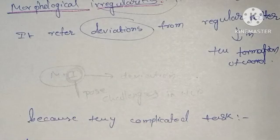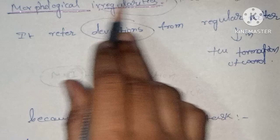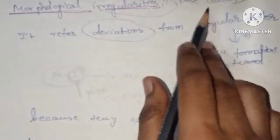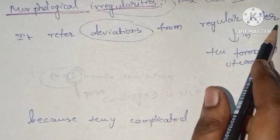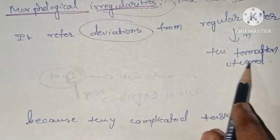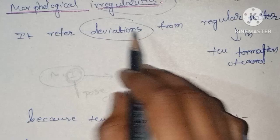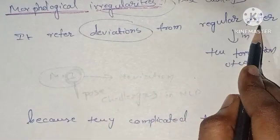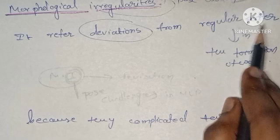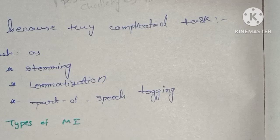Unit 1's next topic is morphological irregularities. Morphological irregularities refer to deviations from the regular pattern in the formation of words. They pose challenges because they are complicated tasks.